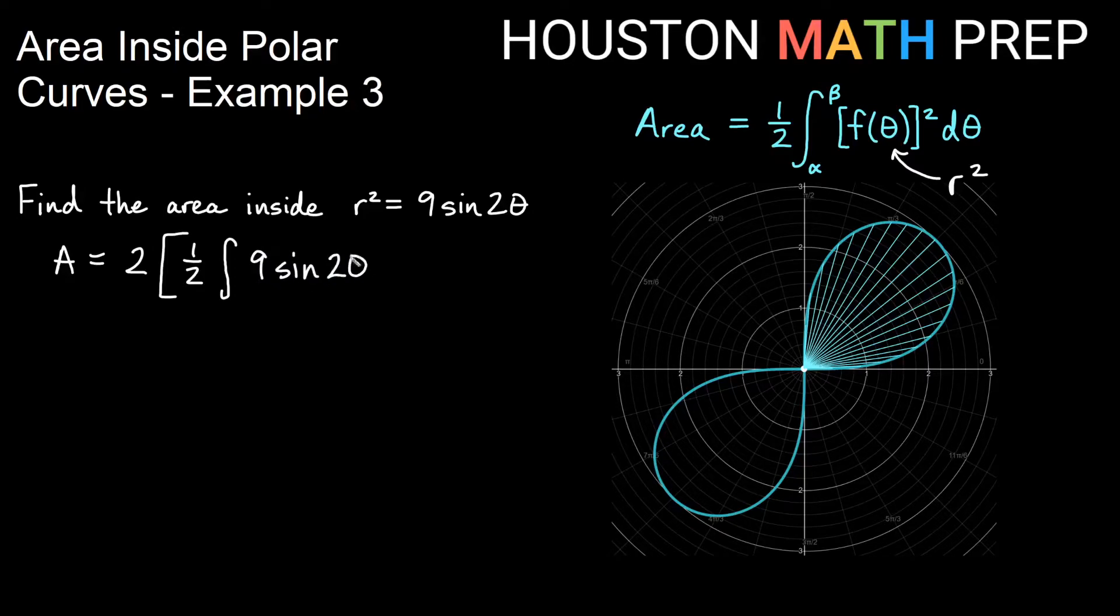Often with these formulas it's just r equals, but with this lemniscate type of formula, we get r² equals. It's already r squared. It just needs to go in. It's already squared for us before we get there.